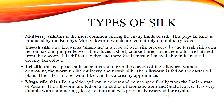Aerie Silk: This is a peace silk since it is spun from the cocoon of the silkworm without destroying the worm, unlike mulberry and Tusse silk. The silkworm is fed on the castor oil plant. This silk is more wool-like and has a creamy appearance.